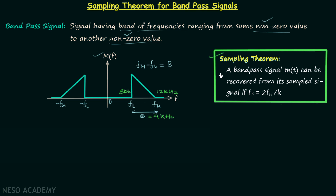According to the sampling theorem, a band-pass signal m(t) can be recovered from its sampled signal if FS, the sampling frequency, is equal to 2 times FH divided by K, where K equals FH divided by the bandwidth B. When FS equals 2·FH/K, this is known as the minimum sampling frequency. If FS is greater than 2·FH/K, we can still recover the signal.